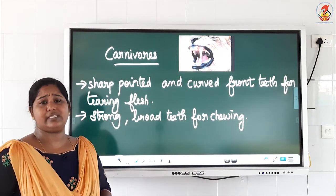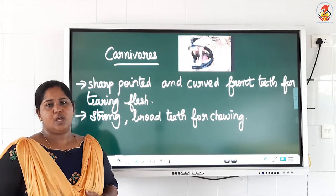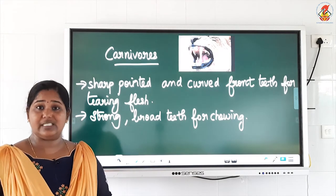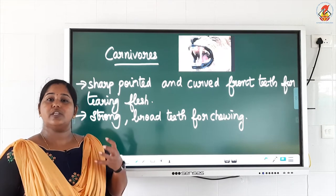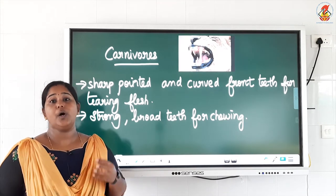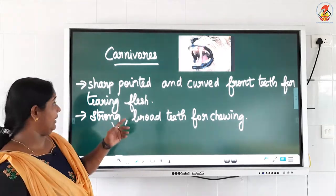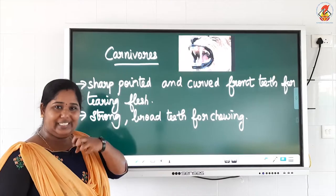Next is carnivores. Carnivores are flesh-eating animals. They kill their prey and eat the flesh of animals. They cannot manage with just biting teeth — they need to tear the flesh. So for tearing, they have strong sharp hooked or curved tearing teeth. I have shown the picture of the mouth of a lion — the teeth are very sharp and curved or hooked in order to tear the flesh.